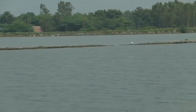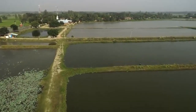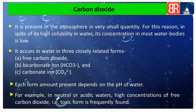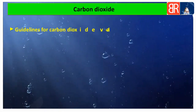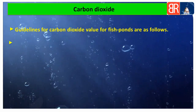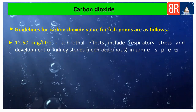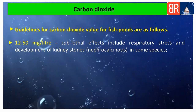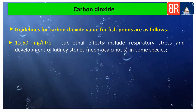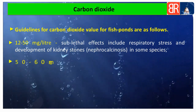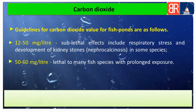इन तीन forms के amount का presence water के pH पर depend करता है। For example, neutral and acidic water bodies में free carbon dioxide का concentration ज्यादा होता है, जिसके कारण यह form अधिकतर toxic पाया जाता है। Fish pond में carbon dioxide की guidelines हैं: 12 to 50 mg per litre range sublethal effects जैसे respiratory stress और kidney stones (nephrocalcinosis) cause करती है, जबकि 50 to 60 mg per litre range prolonged exposure पर many fish species के लिए lethal होती है।